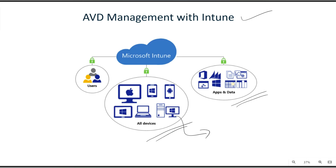When it comes to applications, you can selectively wipe the application. For example, if users are using mobile applications such as Microsoft Teams or Outlook on their personal devices and they leave the company, you can remotely wipe those applications from their personal device. All these actions are available through Microsoft Intune mobile device management solution.